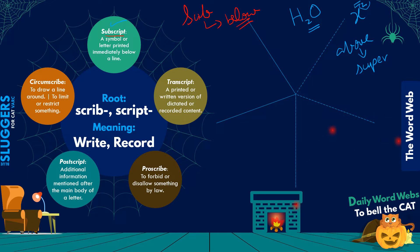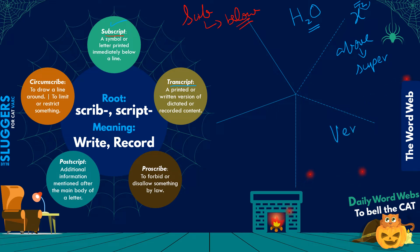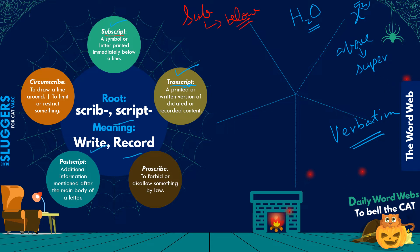Those are the terms subscript and superscript. Moving on, the next term is 'transcript.' People often ask, 'Do you have a transcript of the interview?' Some podcasts also provide not just a summary but a verbatim record — verbatim means word by word — of the whole podcast. When what a speaker is saying is written down word by word and provided in full, that is called a transcript. Transcript comes from two roots: the second part is obviously 'script,' meaning to write or record something, and 'trans'—